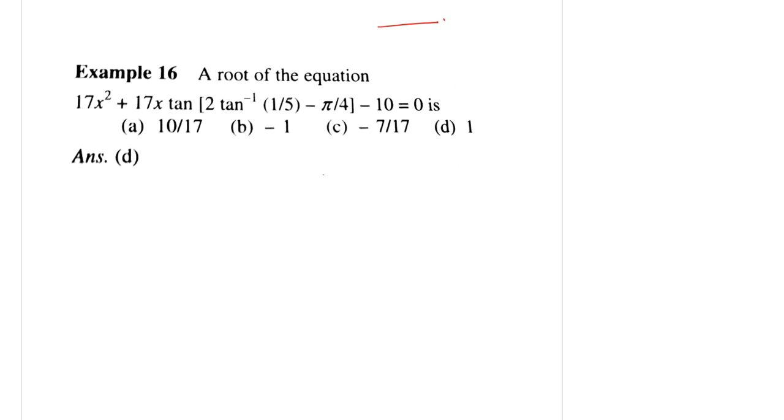So we have tan(2 tan⁻¹(1/5)) and this can be written as 2 × (1/5) divided by (1 - 1/25). This is equal to 2/5 × 25/24, which equals 5/12.